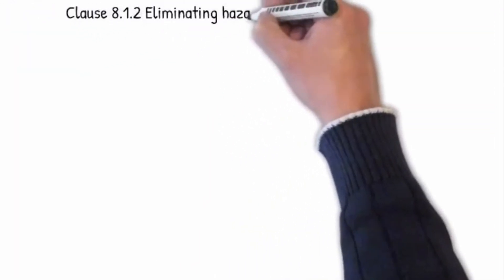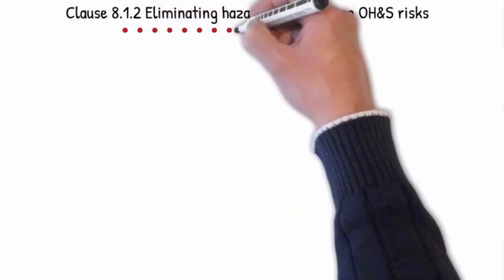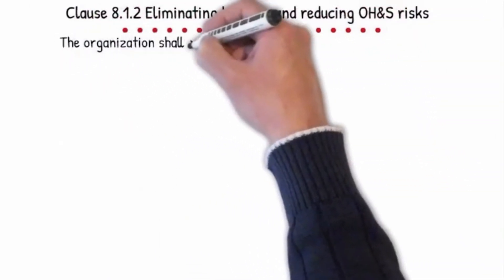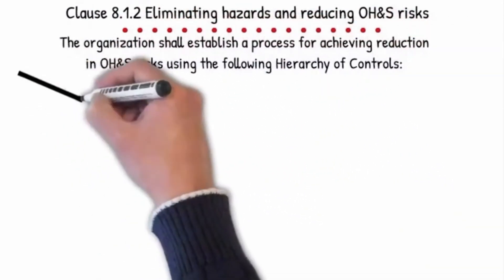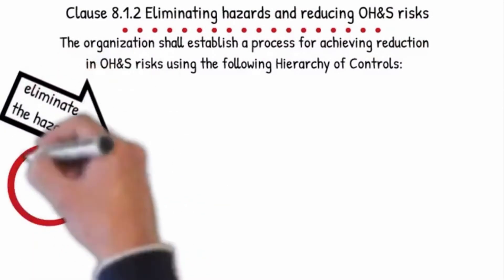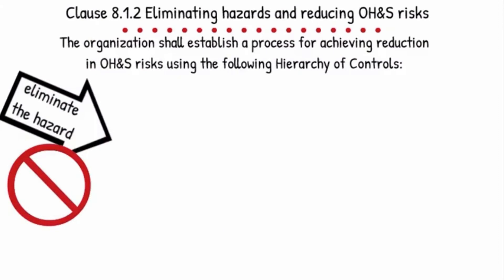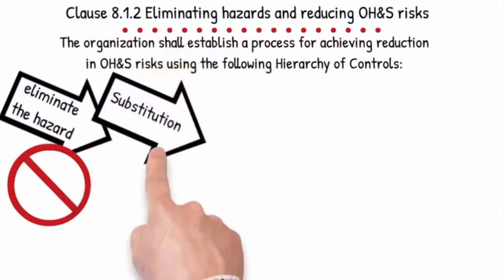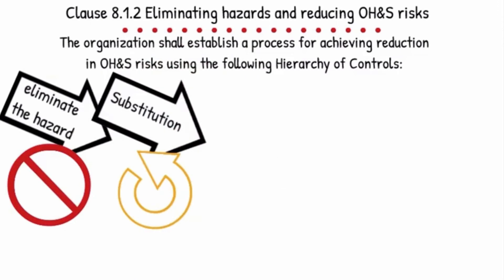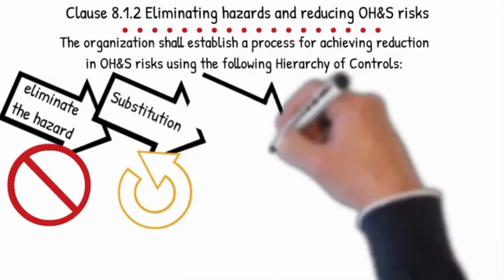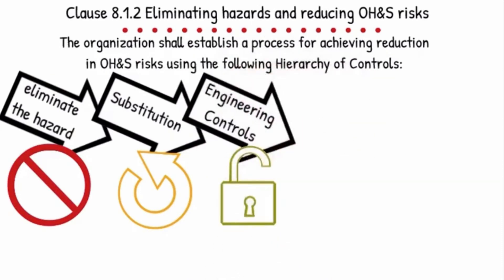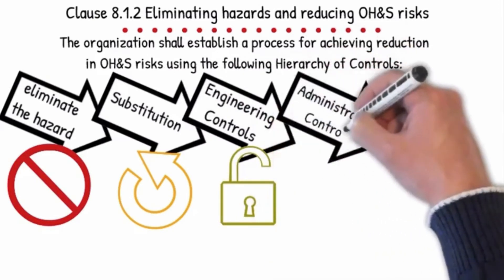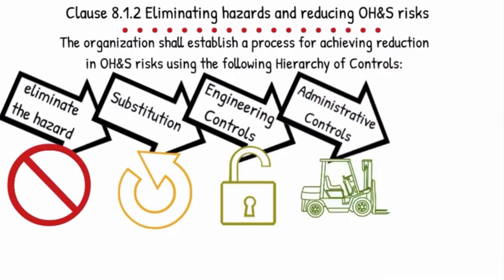Clause 8.1.2 Eliminating hazards and reducing OH&S risks. The organization shall establish a process for achieving reduction in OH&S risks using the following hierarchy. Eliminating the hazard can be achieved through removing the hazard or selecting alternate products or equipment to eliminate the risk. Substitute the hazard by substituting the substance, method or material to reduce the risk. Use engineering controls to modify existing machinery, purchase different machinery, or provide a physical solution. Implement administrative procedures by developing work methods or procedures to reduce the conditions of risk and training the staff.